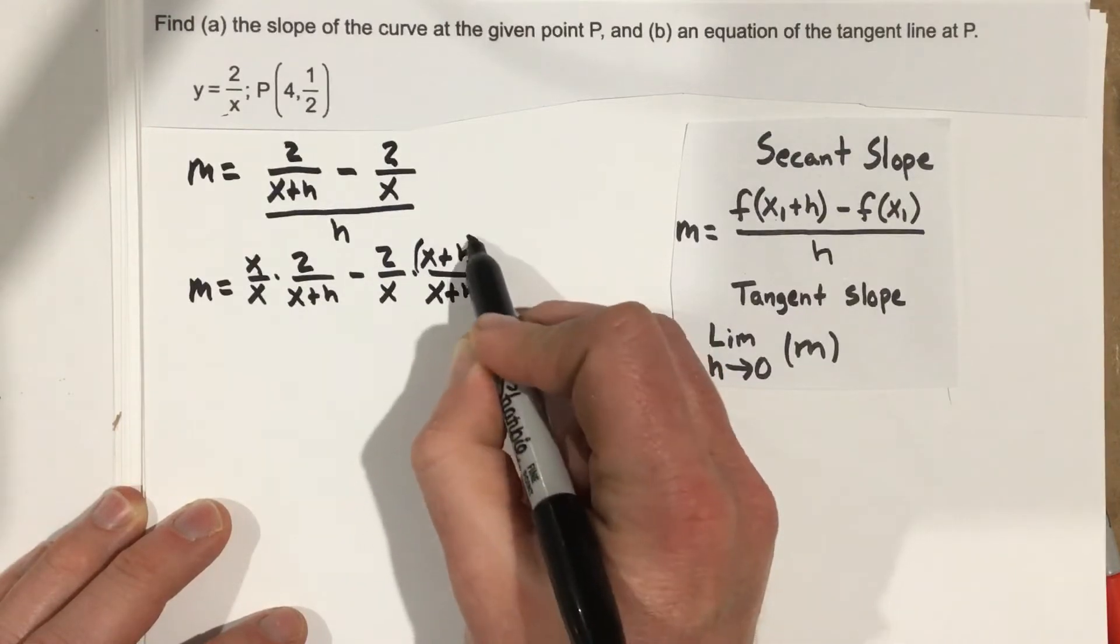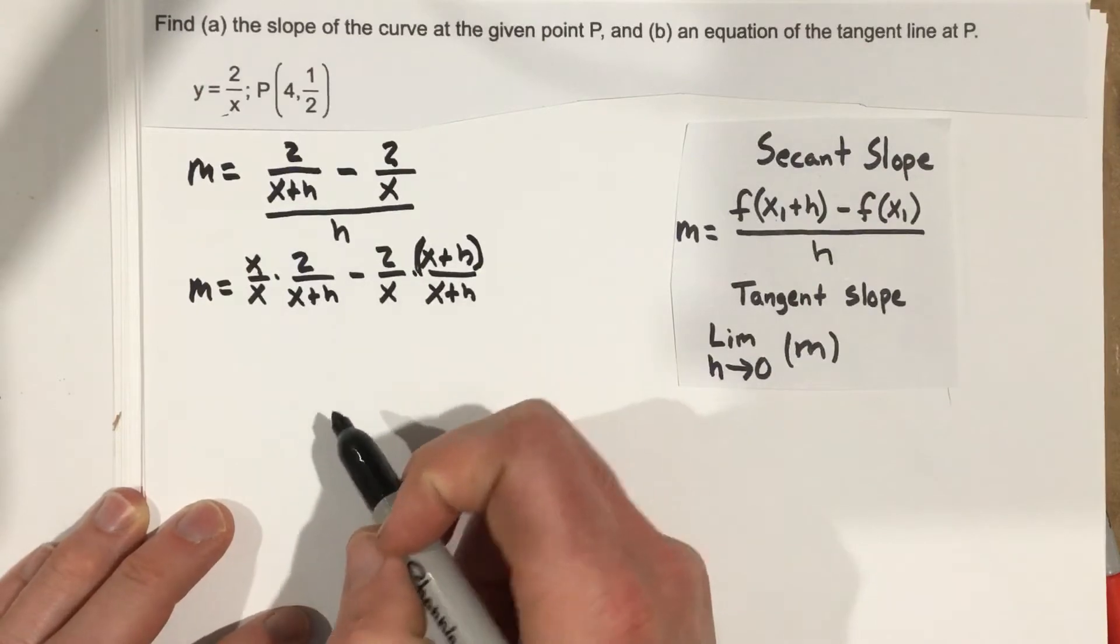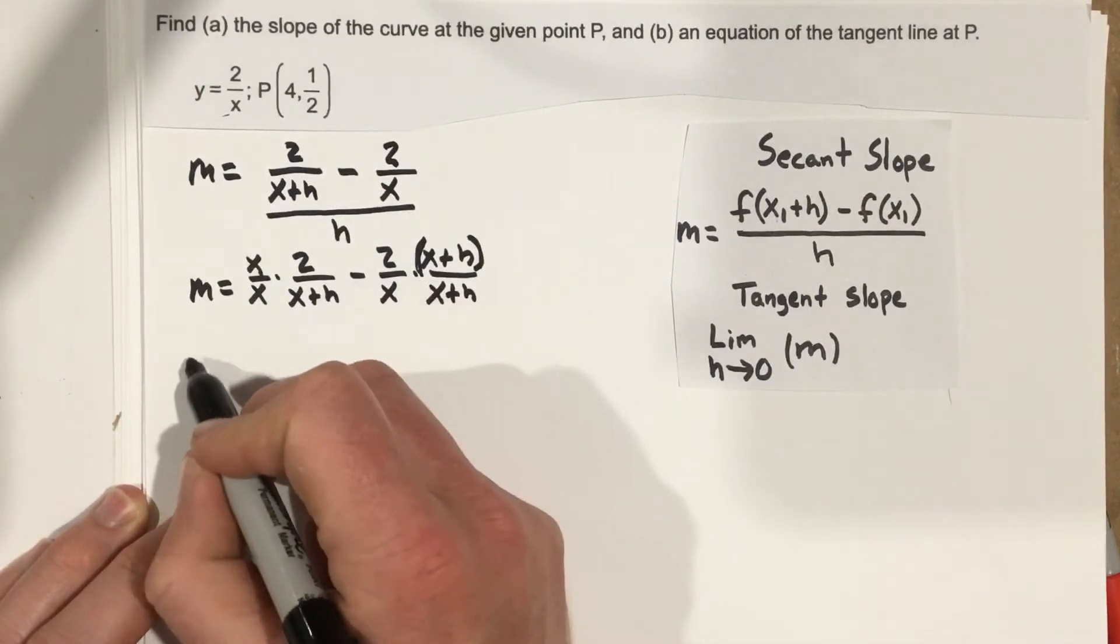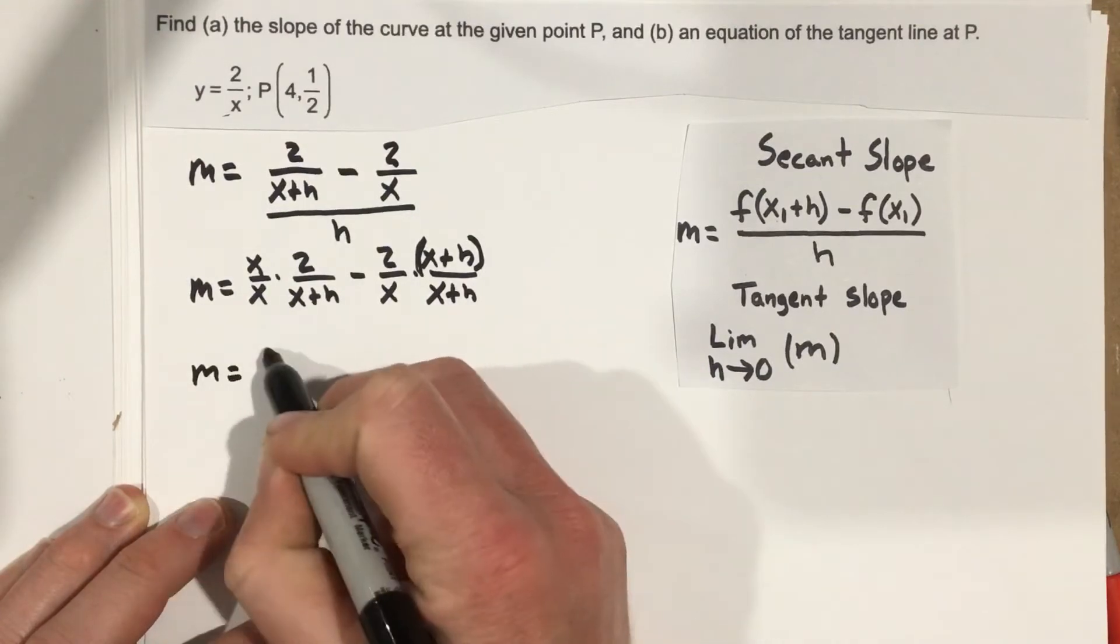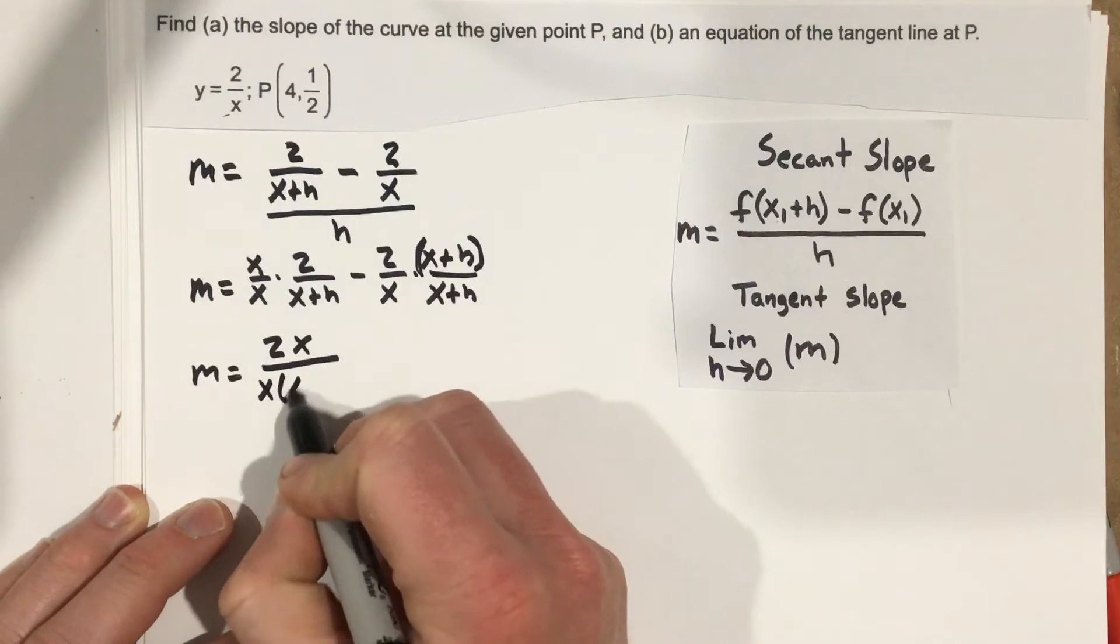I'm putting parentheses here because I want to make sure that we obviously distribute this as negative and the 2. So we get m equals 2x over x times x plus h.